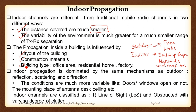Indoor propagation is dominated by reflection, diffraction, and scattering — the same mechanisms as outdoor. However, conditions are much more variable. Even whether a door or window is open or closed can affect the attenuation. A closed door gives a different set of attenuation from an open one. In this particular room, for example, there are two doors — one at the front and one at the back — which is rare, and that can add to the overall loss.